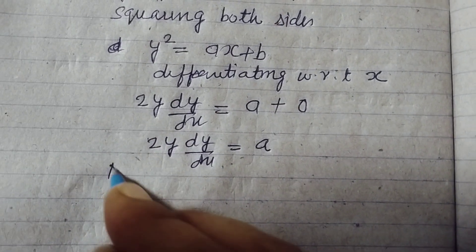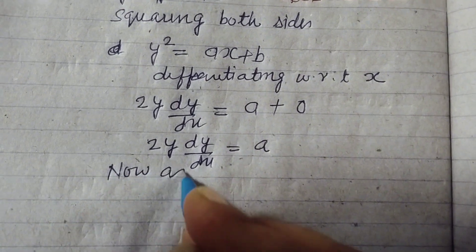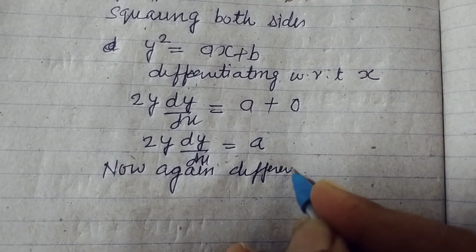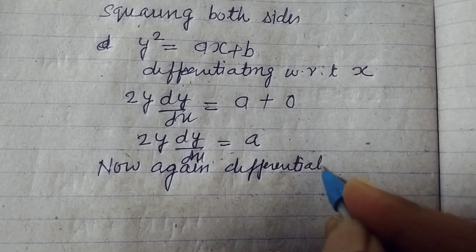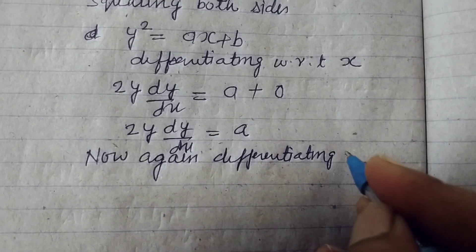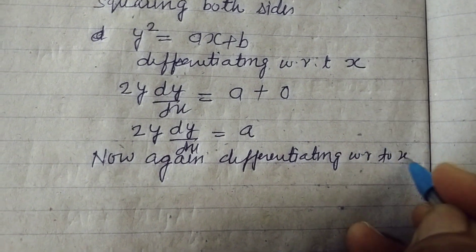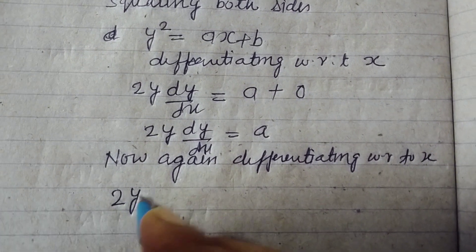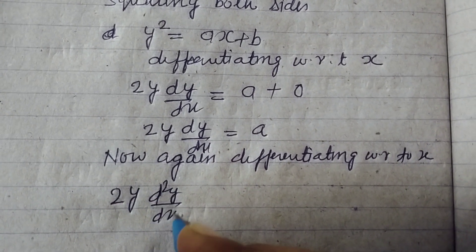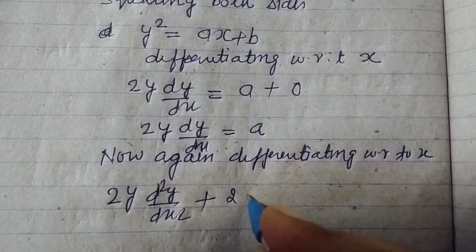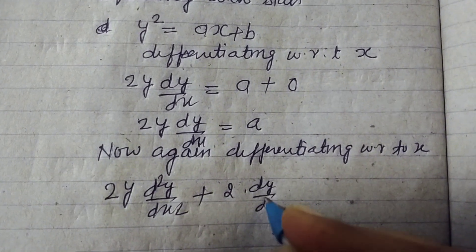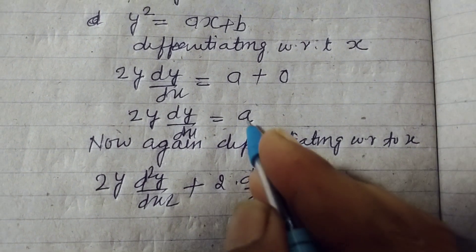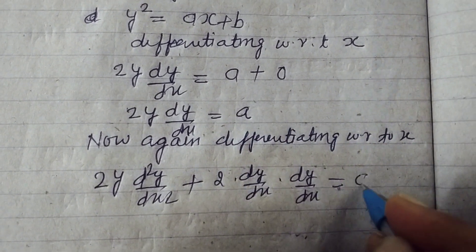Now again differentiating with respect to x, 2y d square y over dx square plus 2 dy by dx times dy by dx equals differentiation of a which is constant, so zero.